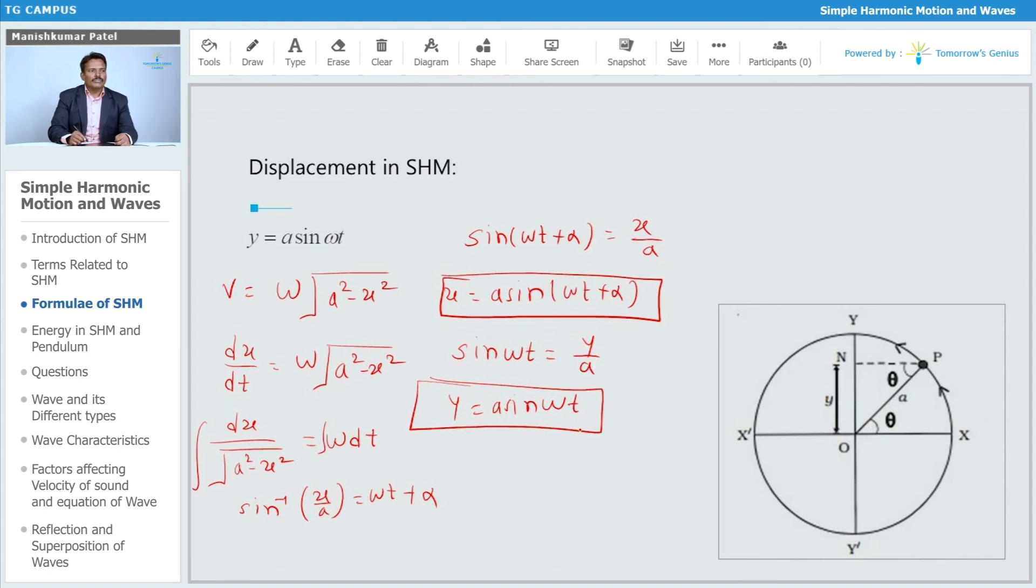That is the expression for your displacement. The maximum displacement is x equals a, that is your maximum displacement, and x equals zero is nothing but your minimum displacement. That is your displacement in case of SHM.